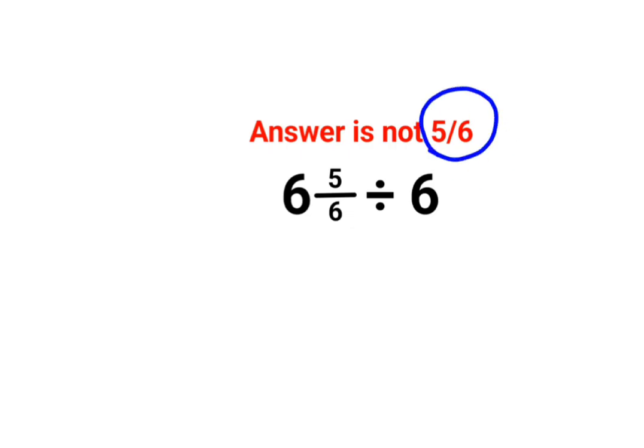The reason for that is we have 6 and 5 by 6 divide by 6. People think that let's just divide this 2 and then you are just left with 5 by 6. Now this is incorrect.